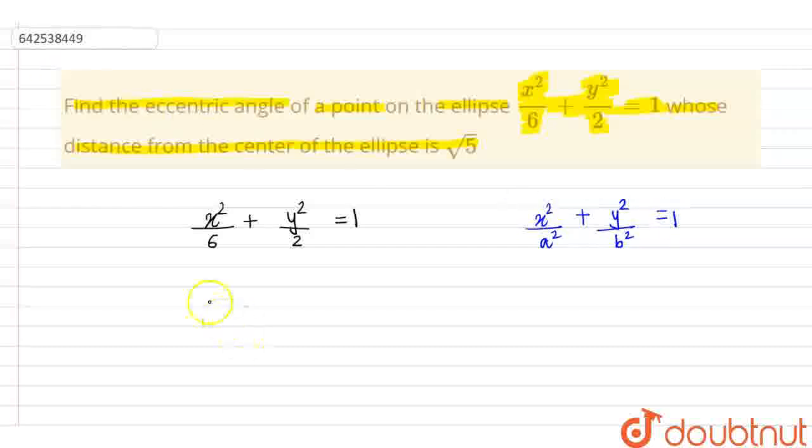So if we compare from here, we get a² equals 6 and b² equals 2. This gives us a equals root 6 and b equals root 2.